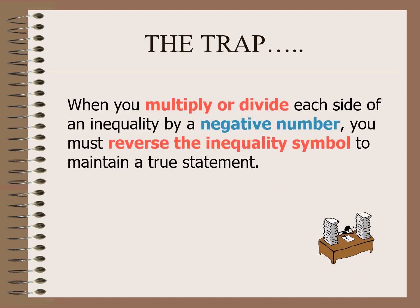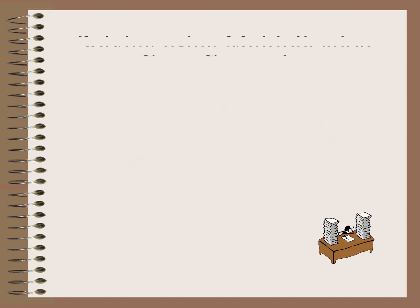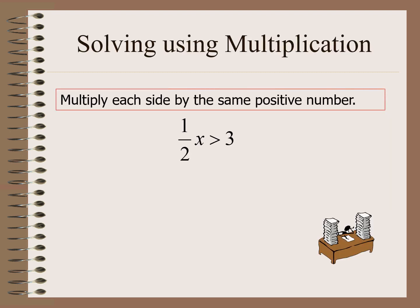The drop: when you multiply or divide each side of an inequality by a negative number, you must reverse the inequality symbol to maintain a true statement. For example, if we have one half x greater than 3, we multiply both sides by 2 — a positive number — so we do not reverse the symbol. x is greater than 6. Nothing's changed.